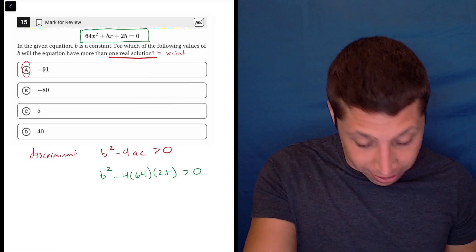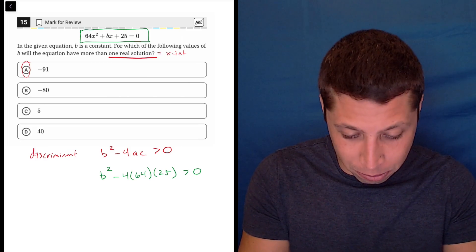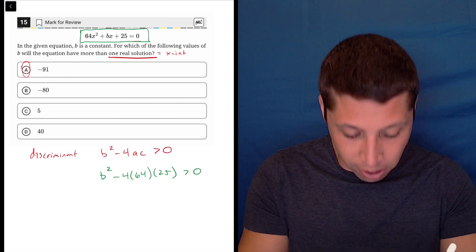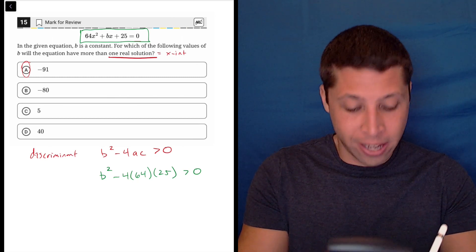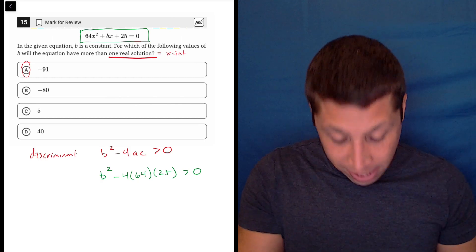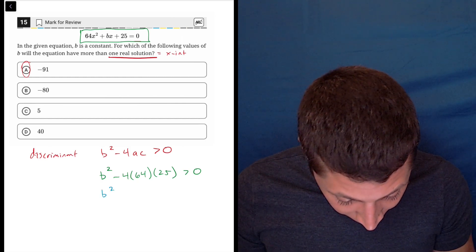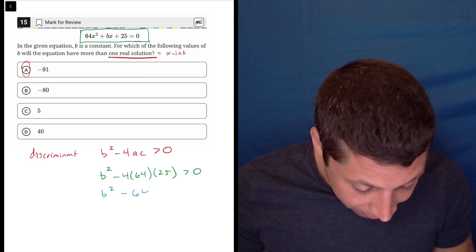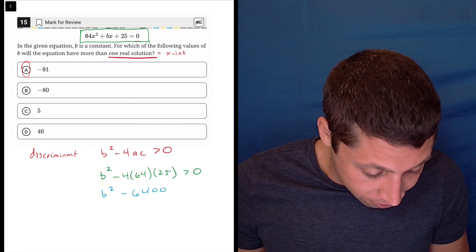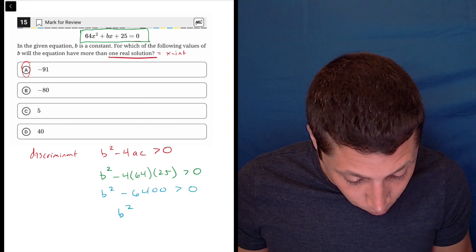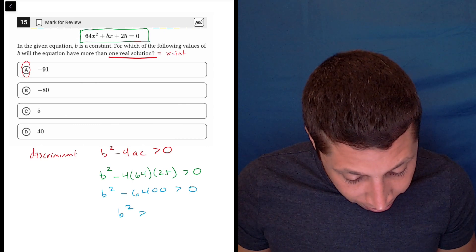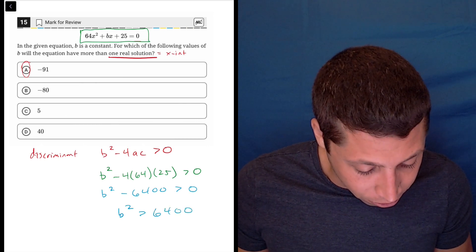So I would use the calculator for this. I'm not going to do 4 times 64 times 25 in my head. So 4 times 64 times 25 is 6,400. So b² - 6,400 is greater than 0. So b² is greater than, we can add the 6,400 over.